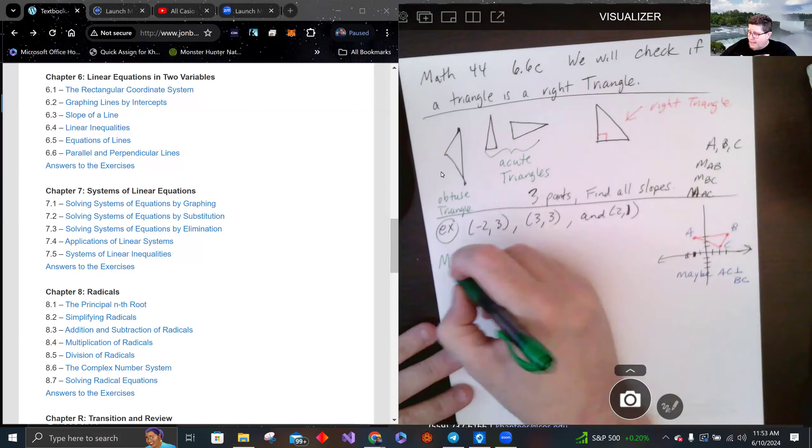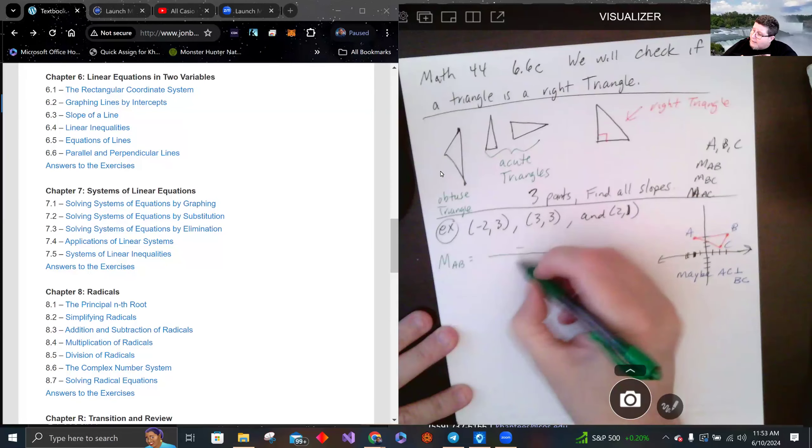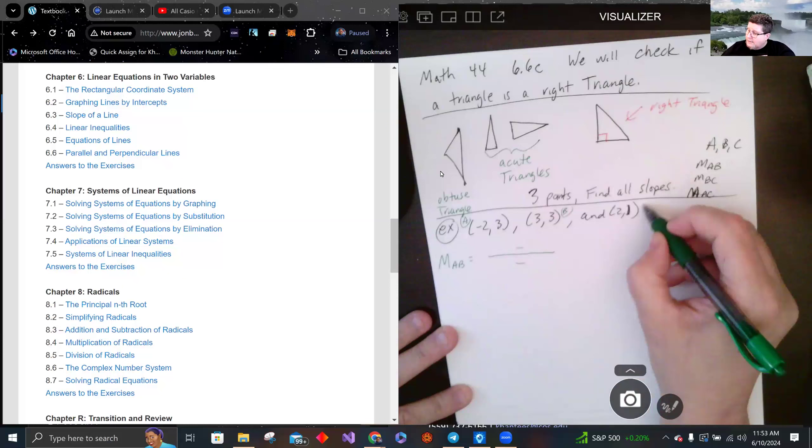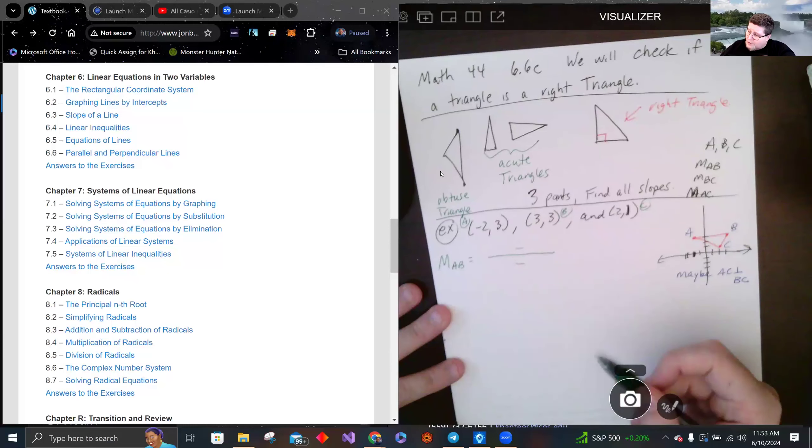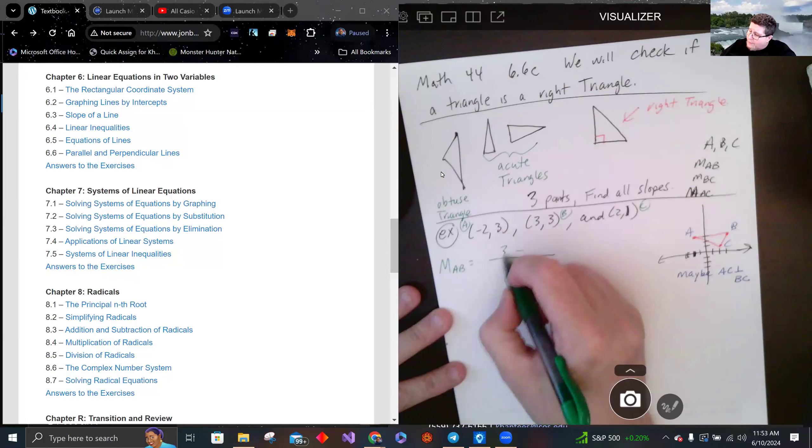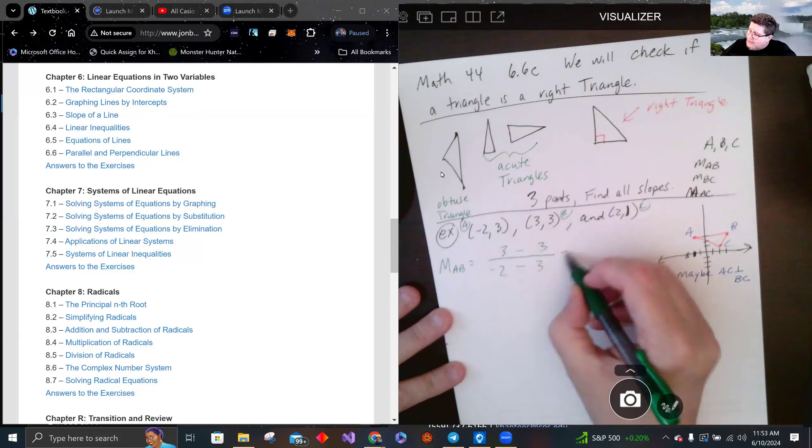So m_AB: this was A, this was B, and this was C. I'm just going to do the order that I have. This will be (2-3)/(-2-3) = 0 over negative 5.